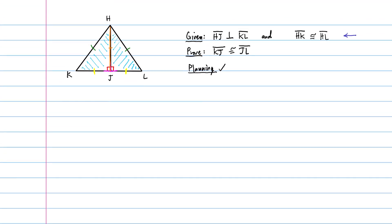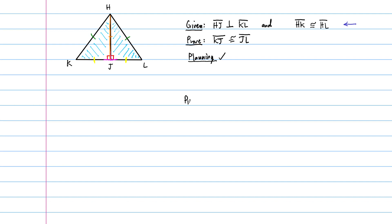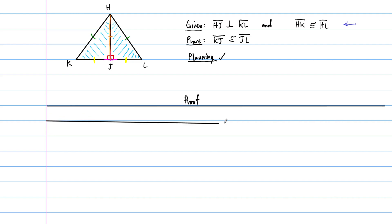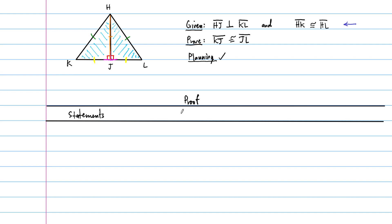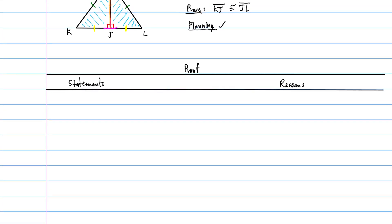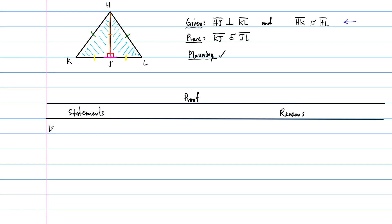A formal proof is just a table with a list of statements and reasons. So we have two columns: statements and reasons. The first things you always state are the given statements. The given statements here are: HJ is perpendicular to KL, and HK is congruent to HL. Both of these are given, so the reason for this is simply that they were given to us.